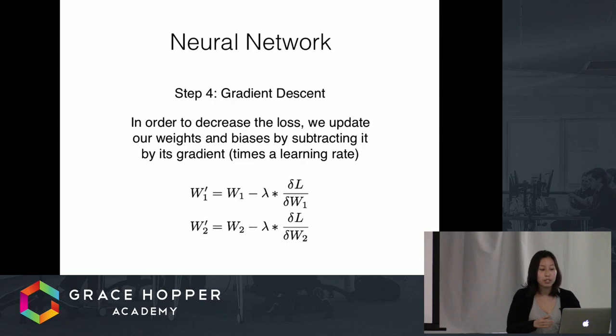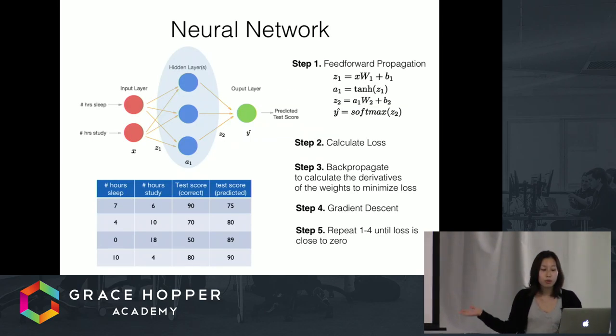Step four is once we compute how much we need to change by, we're going to actually have to update the weights and biases. That's what the gradient descent means. Step five: we're going to repeat steps one through four until the loss is close to zero. That's what really training a neural network is about. A neural network will make a guess, correct it by its own mistakes, make a guess again, correct its own mistakes, and that's what the training is.